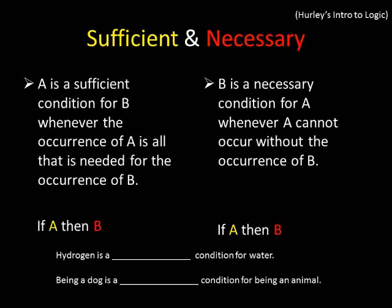Hurley uses the example of a box with unknown contents. If you're told there's a dog in the box, you know for sure there's an animal, because being a dog is a sufficient condition — it's all that is needed for being an animal. However, it's not necessary that the box contain a dog in order for it to contain an animal, since the box could contain some other non-dog animal like a cat.